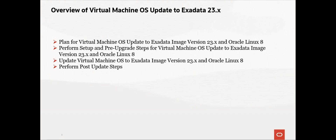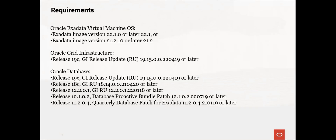Lastly, perform post-update steps. Remove root user SSH equivalents. If there is any customer installed software, update it to OL8 compatible versions. Here are the requirements that must be met before updating to Exadata 23.x. These requirements are validated during patch manager pre-check. These are just the minimum requirements. If you need to update Exadata grid infrastructure or database software to meet Exadata 23.1 requirements, the recommendation is to update to the latest available version and not to the minimum. Oracle recommends that you update to the latest Exadata 23.x version.